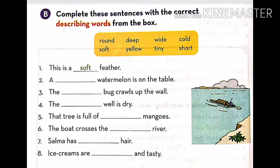Next, the dash bug crawls up the wall. The tiny bug. It will be tiny here. Next, the dash well is dry. The deep well is dry. Write deep.